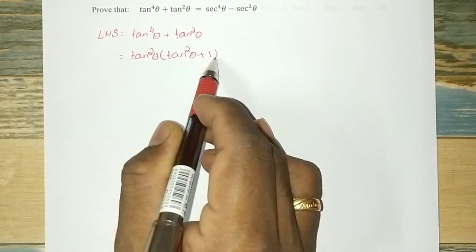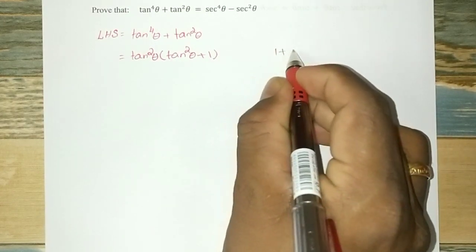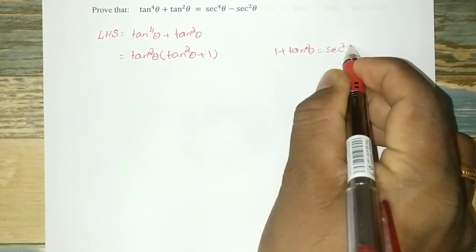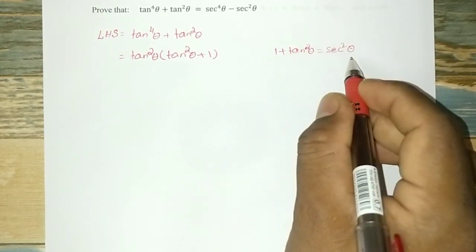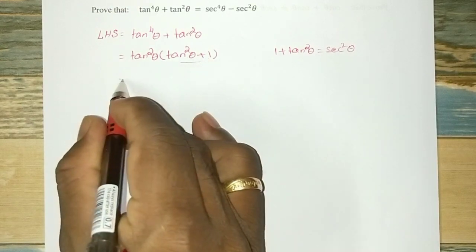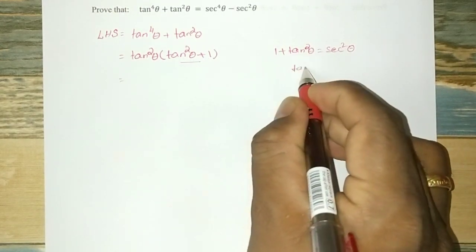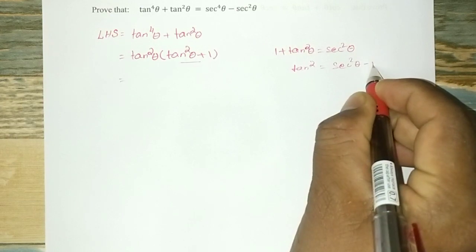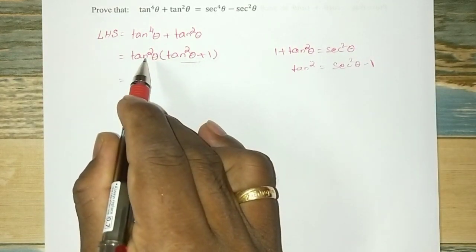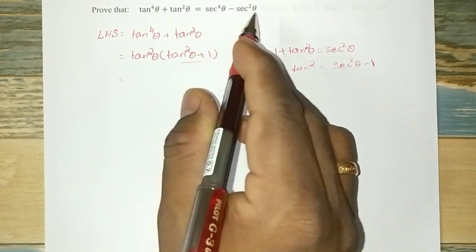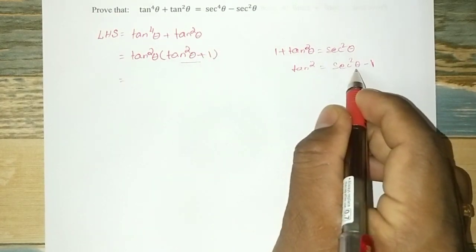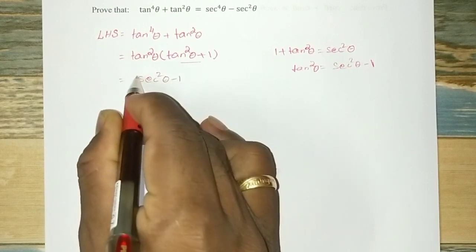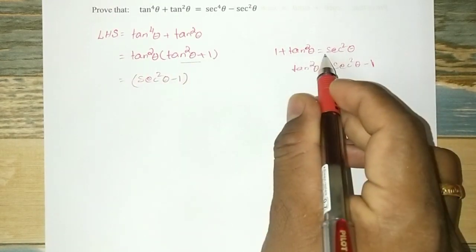Now, for tan square theta, we substitute using the identity: tan square theta equals secant square theta minus 1. So the expression becomes secant square theta minus 1, multiplied by tan square theta plus 1, which equals secant square theta.